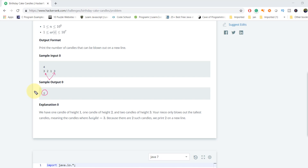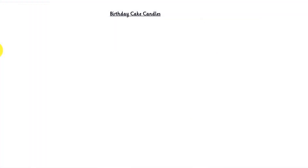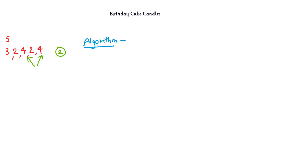Now let's build the logic around it. Assume we have an array of size five candles. Our task is to identify how many candles she can blow out. Since she can blow out only the candles with the maximum height, you can see the maximum height is four in this array, and we have two candles with height four. So she can only blow out two candles — but how do we find that?